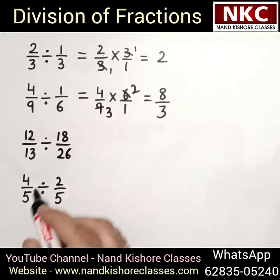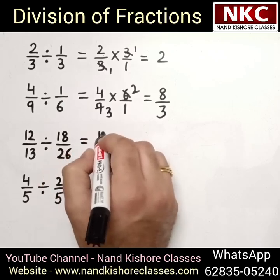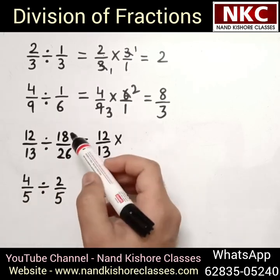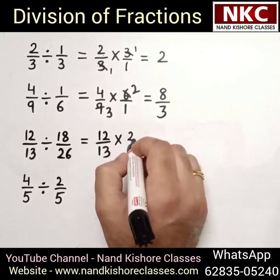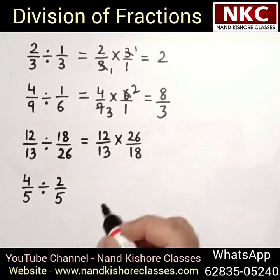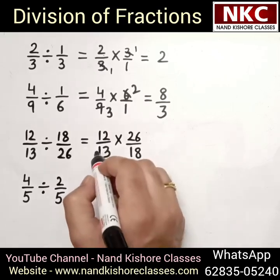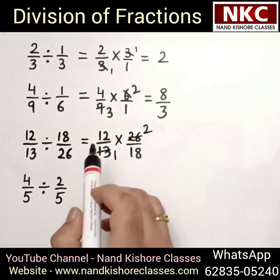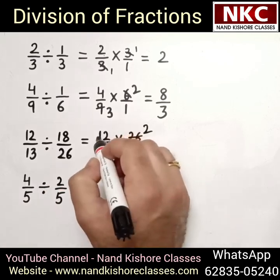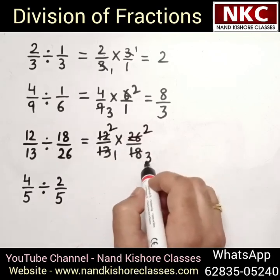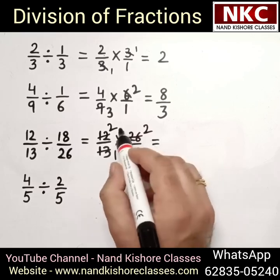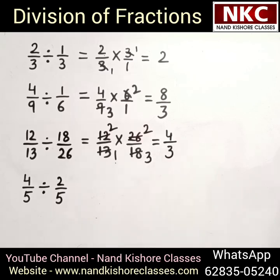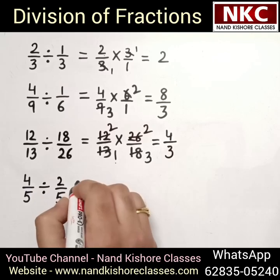Check the third one: 12 over 13 divided by 18 over 26. Change the sign of division to multiplication, and 18 over 26 becomes 26 over 18. Now, 13 goes into 26 two times. Also, 12 and 18 are both divisible by 6 — 6 times 2 is 12, and 6 times 3 is 18 — so it becomes 2 times 2, which is 4 in the numerator, and 1 times 3, which is 3 in the denominator. The final answer is 4 over 3.